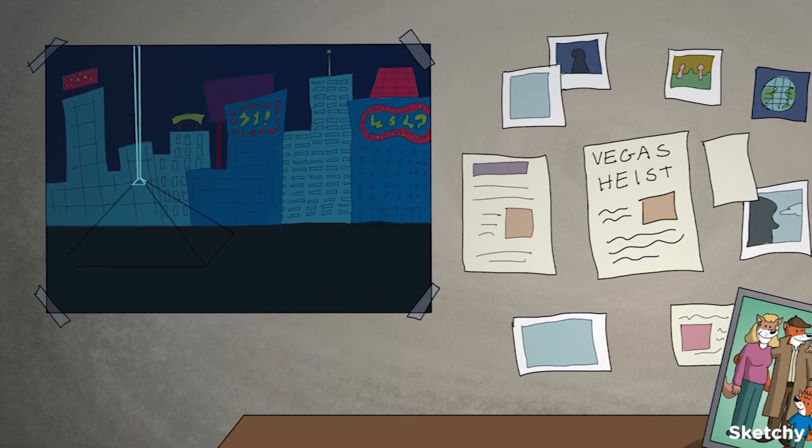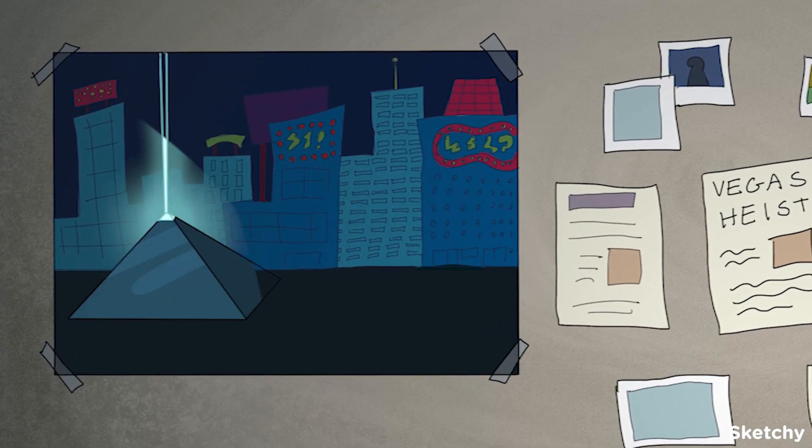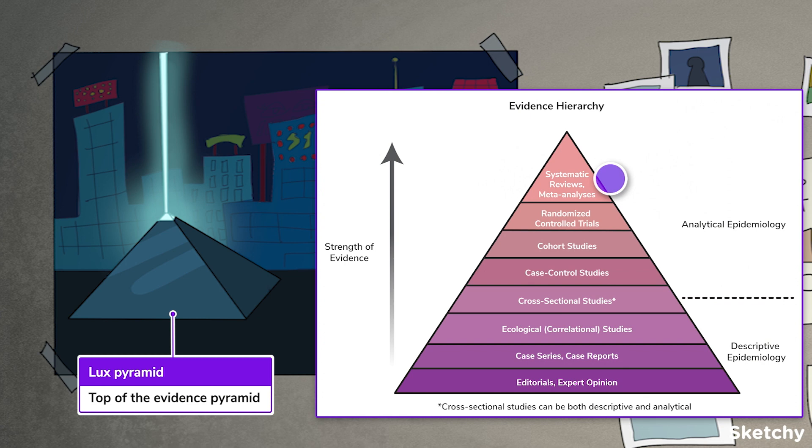To remind you that we're at the top of the pyramid, we've added this 30-story wonder on the strip. The systematic review and meta-analysis are analytical studies. Yeah, they even have analysis in their name.